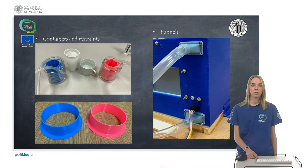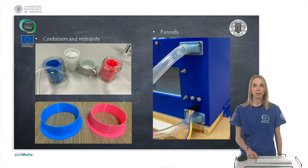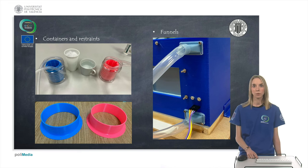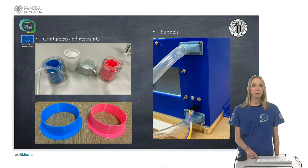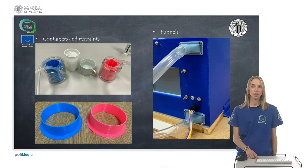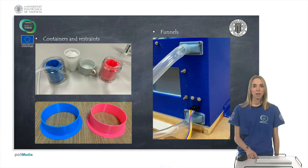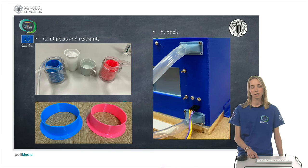Here you can see a container with a blue spiral mechanism where cold water will be introduced, and another container with a pink spiral mechanism where hot water will be introduced. Additionally, you can observe the two panels that lead inside the house. One is installed at the bottom, where hot air — which tends to rise — will pass through, and the other funnel is at the top because cold air tends to go down.